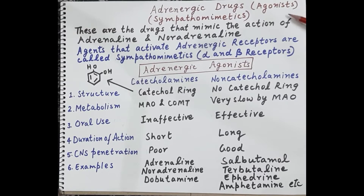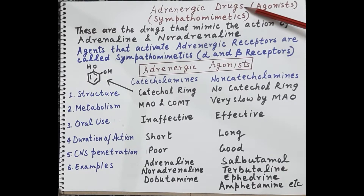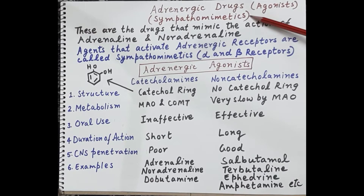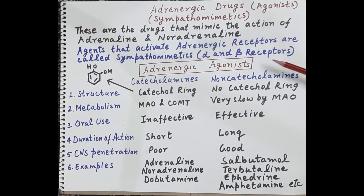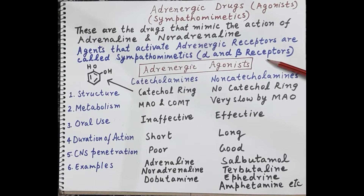In today's session we are going to discuss adrenergic drugs. Adrenergic drugs are of two types: sympathomimetics and sympatholytics. Sympathomimetics are the drugs that mimic the action of adrenaline and noradrenaline. These are drugs that bind to adrenergic receptors — that is alpha and beta receptors — and produce actions similar to those of adrenaline and noradrenaline, and therefore they are called sympathomimetics.